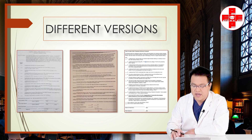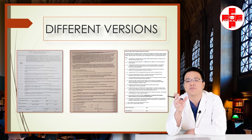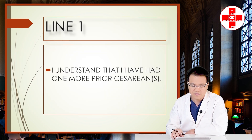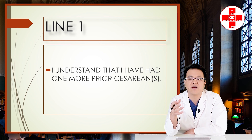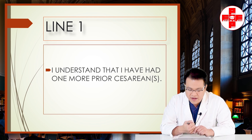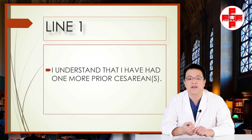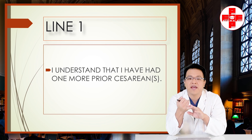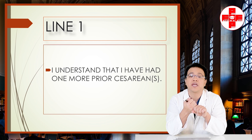Since 1996, there have been multiple iterations of this vaginal birth after C-section consent form. We're going to go over the one we use in our office, starting with line one: 'I understand that I have had one or more prior cesarean sections.' ACOG says that if you've had a previous C-section in the lower uterine segment — the non-contracting part of the uterus — you are a candidate for a trial of labor after C-section.